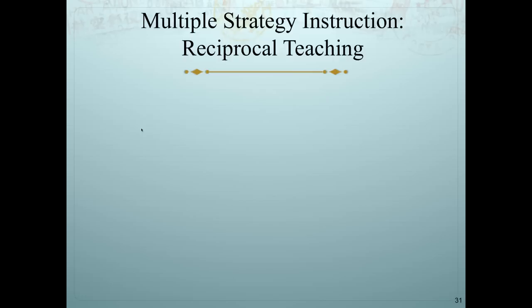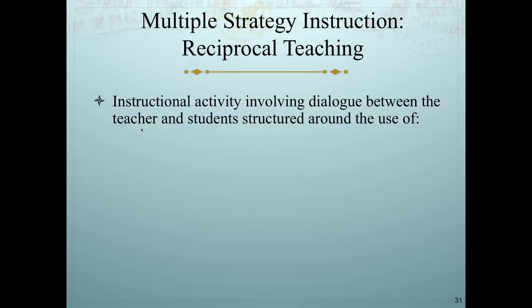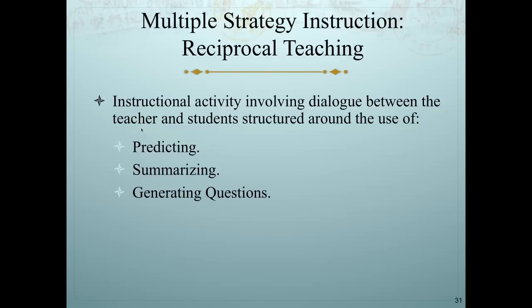Another approach is reciprocal teaching, a key part of Read to Achieve for the narrative portion — lots of dialogue and small group work. Students are explicitly taught each skill individually, then all are combined into one overall multiple strategy: each student takes a role — making a prediction, summarizing, generating questions, and clarifying unknown words — along with a facilitator. Students take ownership of their own learning, but they aren't put in groups until they've mastered each of the four elements individually.